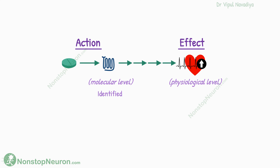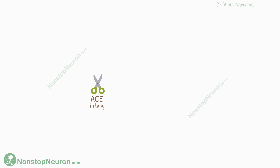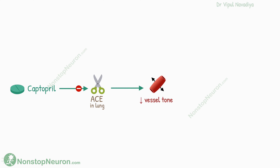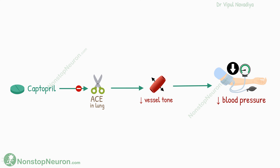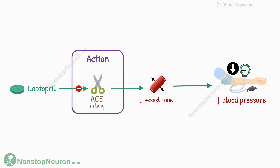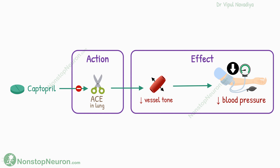Thus, action is identified, whereas effects can be measured and quantified. For example, captopril inhibits the angiotensin-converting enzyme in the lungs. This causes vasodilation and eventually a fall in blood pressure. Here, inhibition of angiotensin-converting enzyme is the action, and fall in blood pressure is the effect.